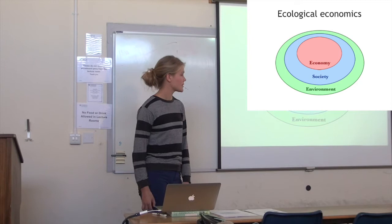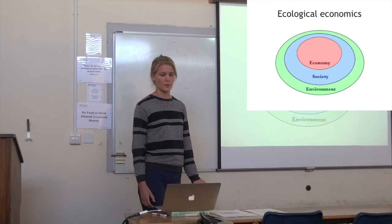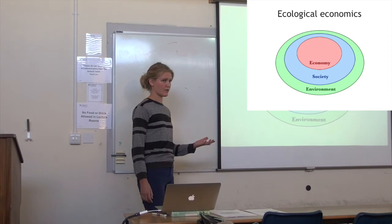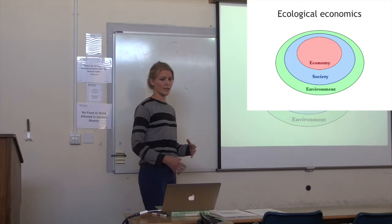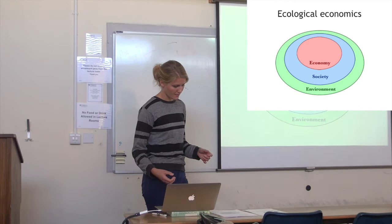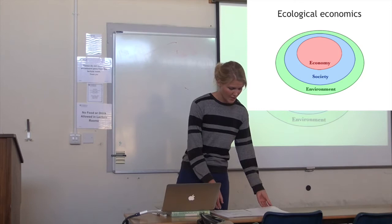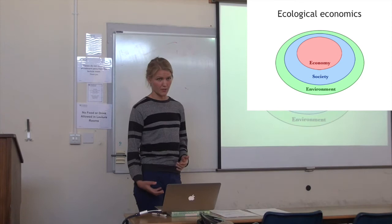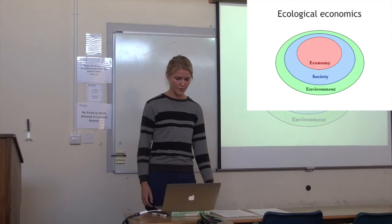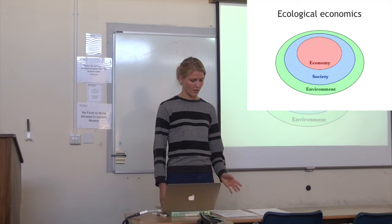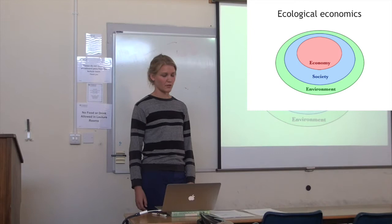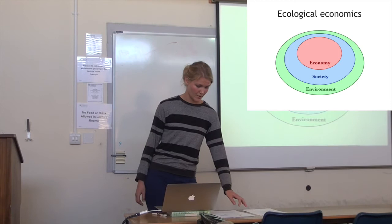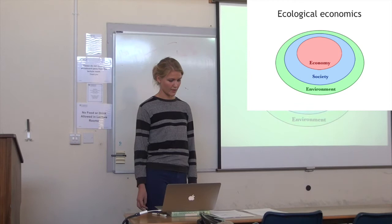This picture hints at at least two things that are important within ecological economics. First of all, there's a notion here of limits — the economy can only grow so much before it hits the limit of the environment. Another thing to get from this picture is that ecological economics does not only focus on the inner circle where the efficiency criteria is important; it also focuses on the two other circles and the relationship between the economy and those spheres. In addition to efficiency, ecological economics focuses on two additional but fundamental criteria: distributional questions and biophysical limits.